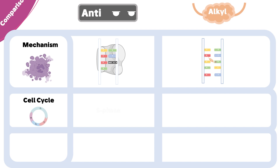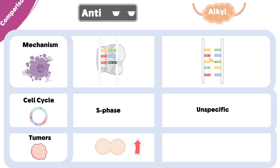The anti-metabolites lead to cell death or arrest in the S phase, because they largely depend on DNA replication that happens in this phase. The alkylating agents can lead to death or arrest at different phases of the cell cycle. Therefore, the tumors targeted by these two families can differ: anti-metabolites are usually used with fast-dividing tumors, while alkylating agents are used for both fast- and slow-dividing tumors.